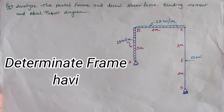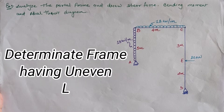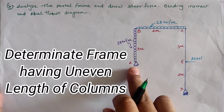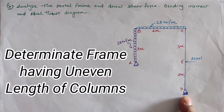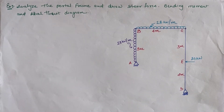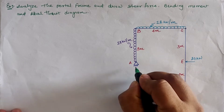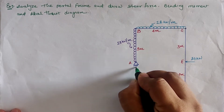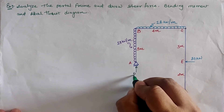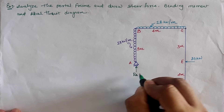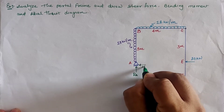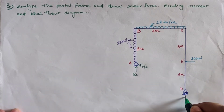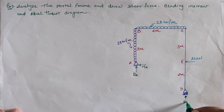Today we are going to analyze the given portal frame having unequal vertical length and loaded as shown in the figure. The first step is to find the support reactions. We assume at location A: a vertical upward reaction Ra, a horizontal reaction Ha, and at location D: a vertical reaction Rd.